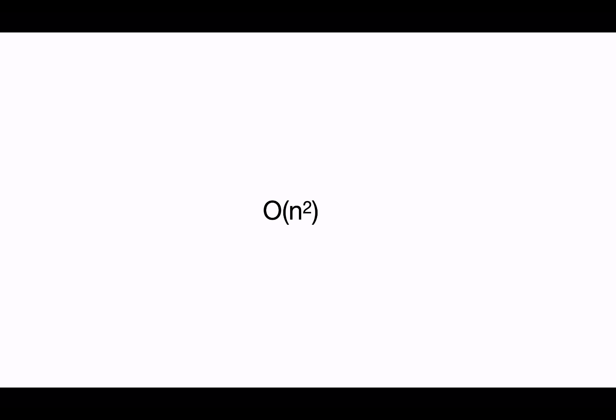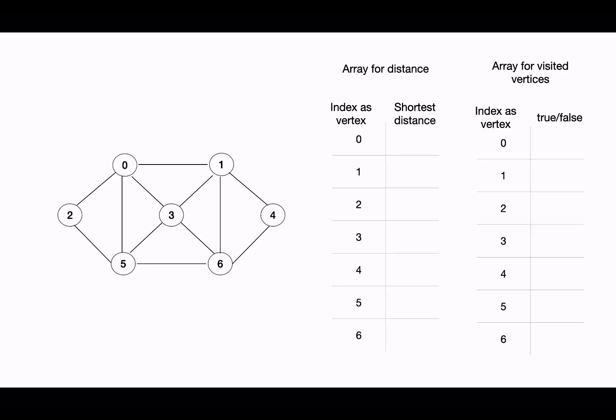For space complexity: to keep track of visited nodes and to hold distances for each vertex from the source, we are creating arrays of size N. So the space complexity will be O(N).